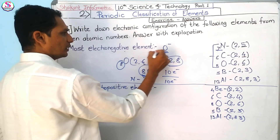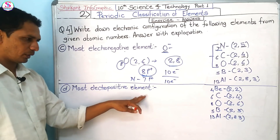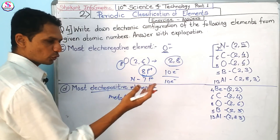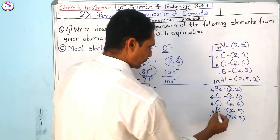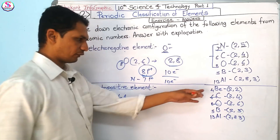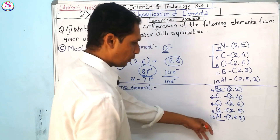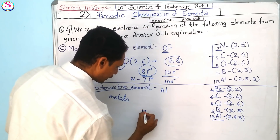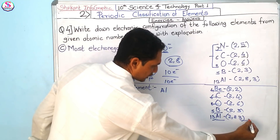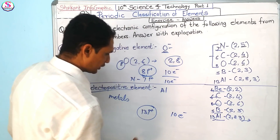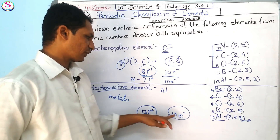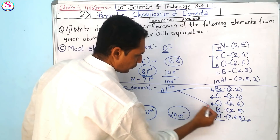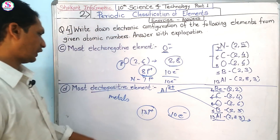For the most electropositive element: electropositivity is related to metals and their tendency to lose electrons. Carbon and oxygen are non-metals, so we consider beryllium, boron, and aluminum. Aluminum (atomic number 13) loses 3 electrons, leaving 10 electrons, and with 13 protons it has more positive nuclear charge than beryllium or boron — so aluminum is the most electropositive element.